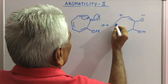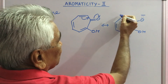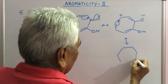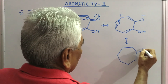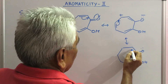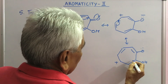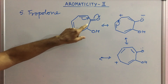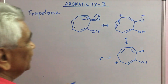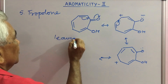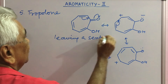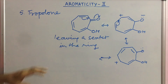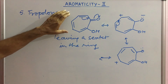There is a positive charge on the ring, and through further delocalization — single bond, double bond rearrangement — what you find is that the seventh electron is transferred to the oxygen atom, leaving a sextet in the ring. That makes tropolone aromatic in nature.